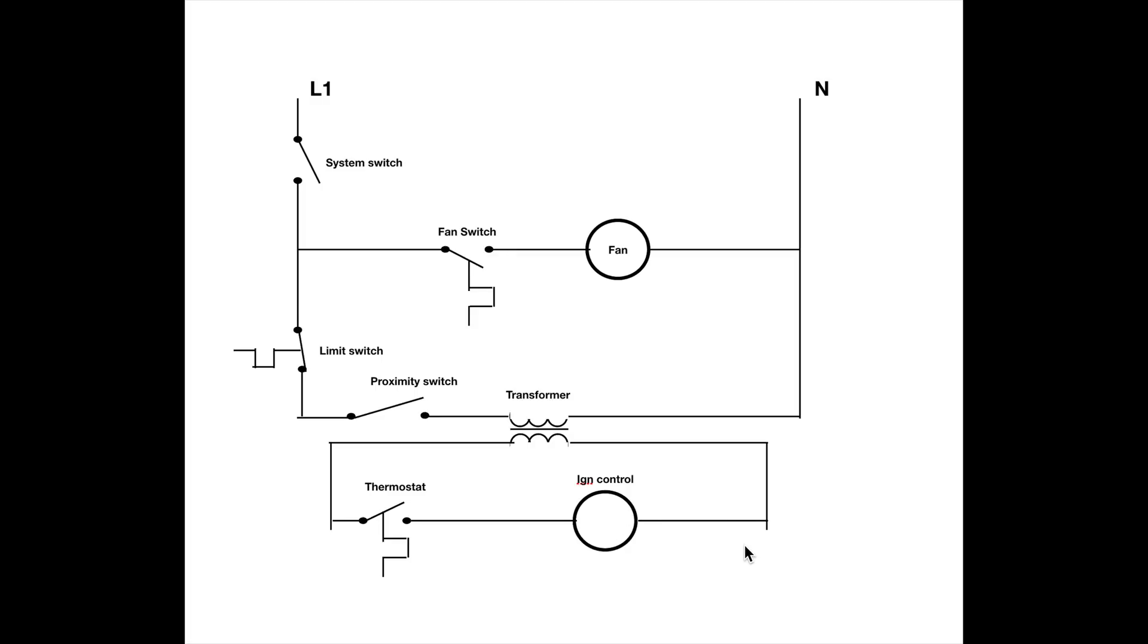That's pretty much the whole ball game but let's look at what happens when I'm out there and the unit starts up. The thermostat will probably already be closed because it's cold out there. So when I walk in, this proximity switch here will make, that powers the transformer and that fires up through the thermostat, the ignition control which starts the burners. Then the burners, as they warm up, this fan switch is going to close and turn on the fan.